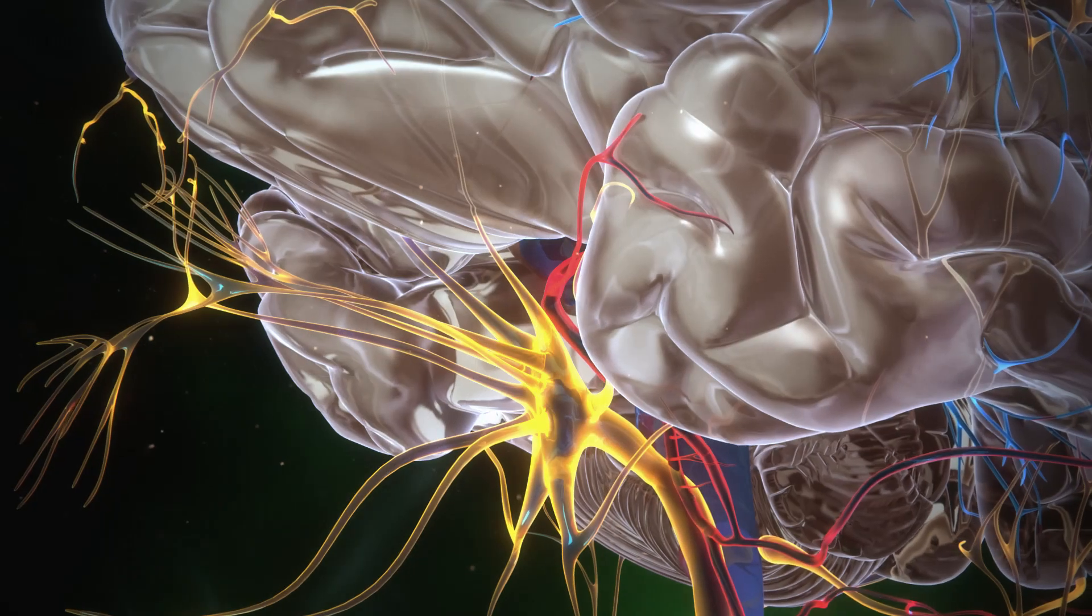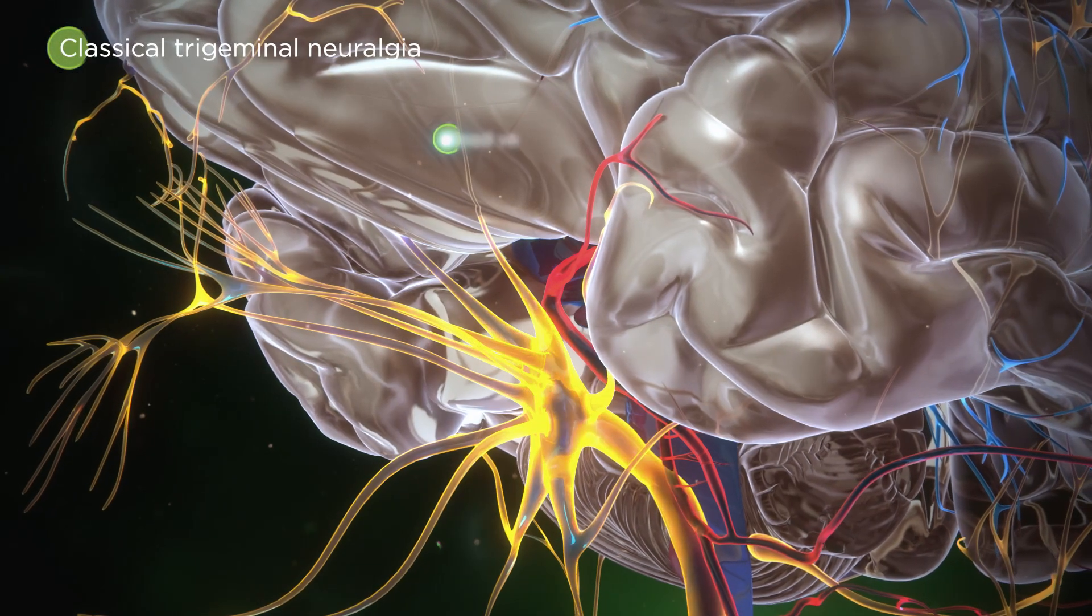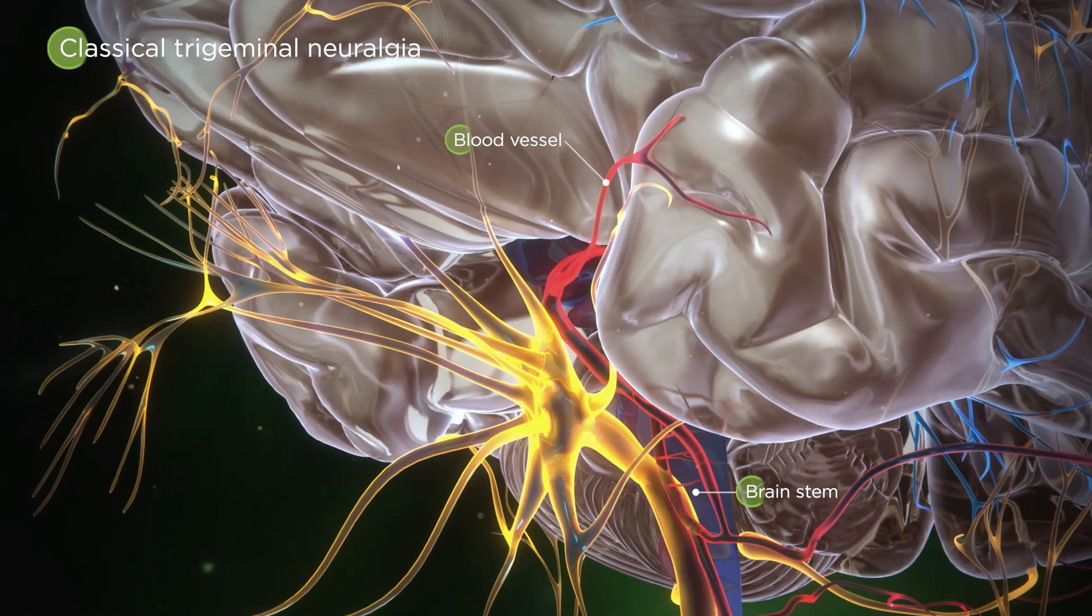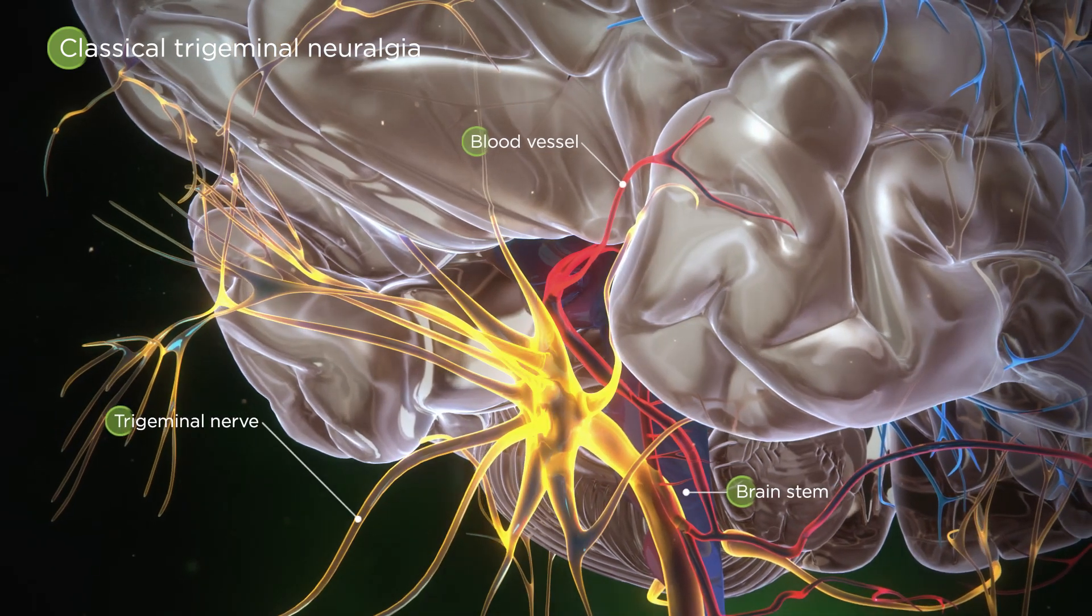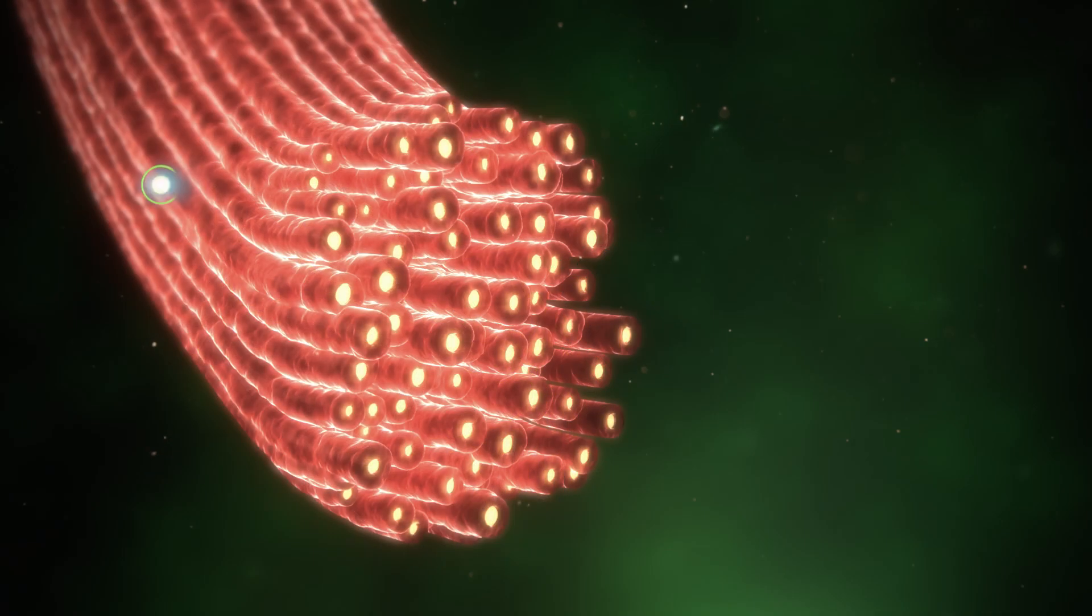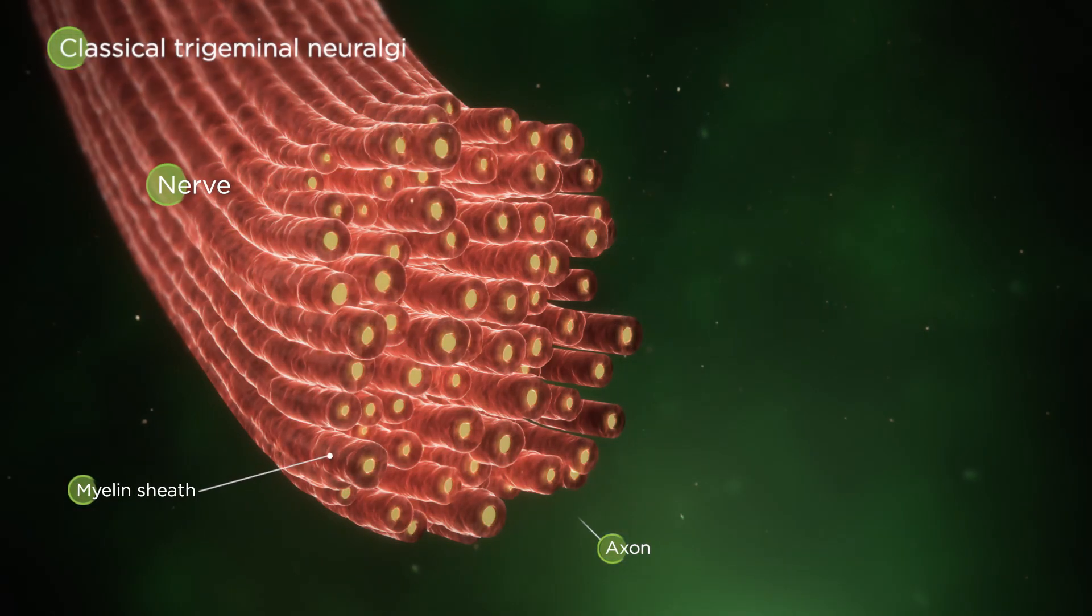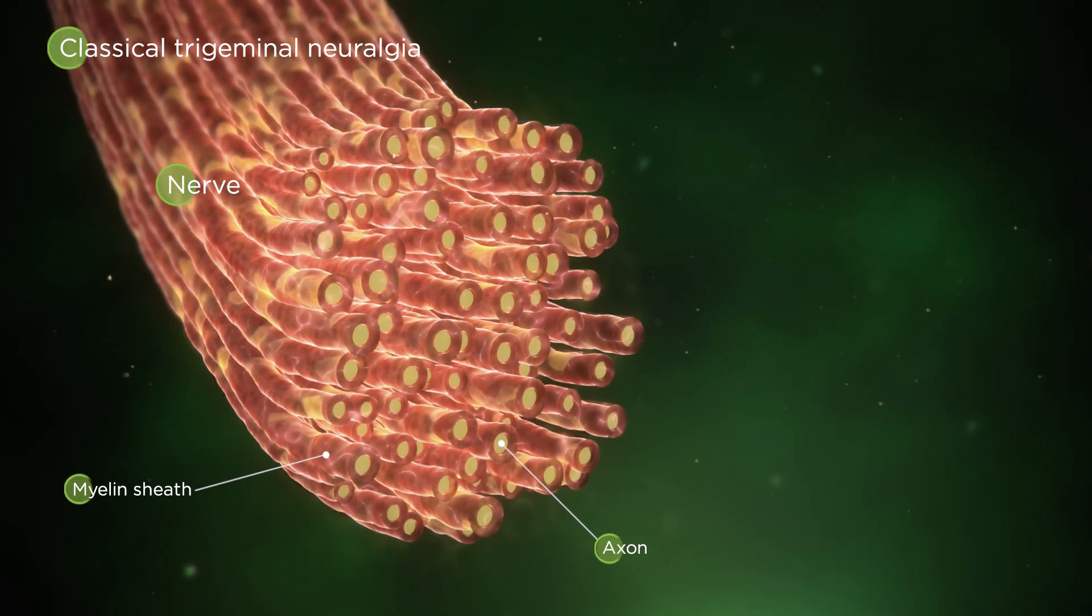This neuropathic pain is thought to be due in part to blood vessels excessively pressing on the base of the trigeminal nerve near the brain stem. Over time, this compression may wear away at the myelin sheath, priming the injured nerve to respond abnormally.